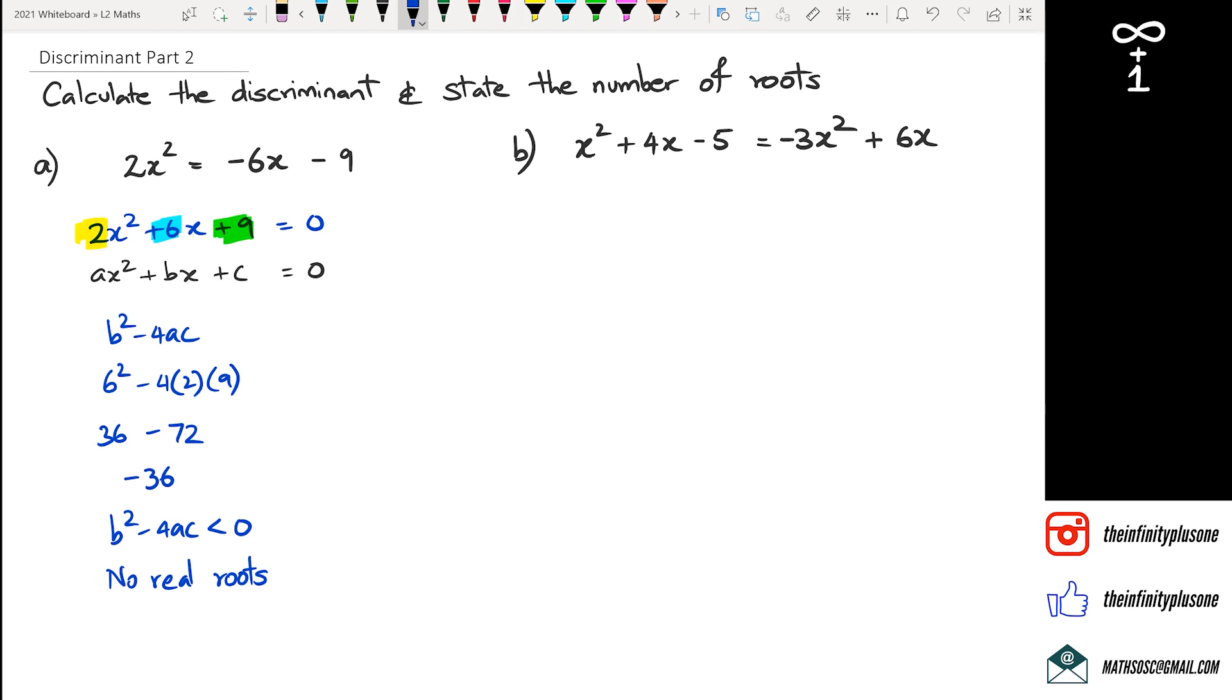The way we're going to do that is by putting these equations together and working out the discriminant. So when we do this, we're going to have to rearrange first. So we've got x² + 4x - 5, and then I'm going to rearrange the 3x² and 6x, which will make +3x² - 6x, and all of that is now equal to zero.